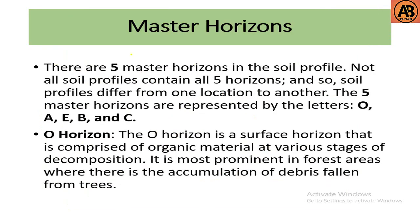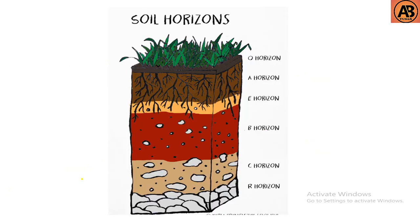There are five master horizons in the soil profile. Not all soil profiles contain all five horizons, and so soil profiles differ from one location to another. The five master horizons are represented by the letters O, A, E, B, and C. The O horizon is a surface horizon comprised of organic material at various stages of decomposition, most prominent in forest areas where there is accumulation of debris fallen from trees.